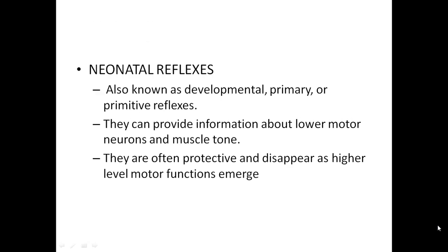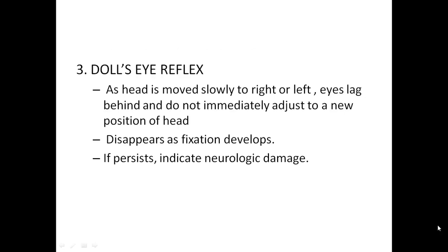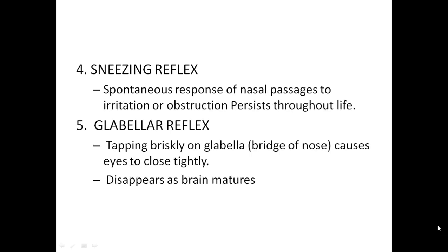Neonatal reflexes, also known as developmental, primary, or primitive reflexes, can provide information about lower motor neurons and muscle tone. They are often protective and disappear as higher-level motor functions emerge. Blinking or corneal reflex: the infant blinks at the sudden appearance of bright light or approach of an object towards the cornea; it persists throughout life. Pupillary reflex: the pupil constricts when bright light shines towards it; persists throughout life. Doll's eye reflex: as the head moves slowly to the right or left, the eyes lag behind and do not immediately adjust; it disappears as fixation develops, and its persistence indicates neurological damage.